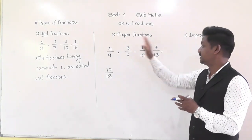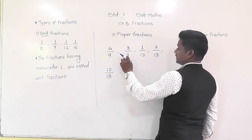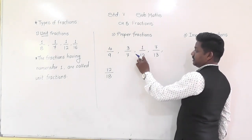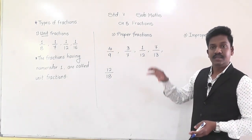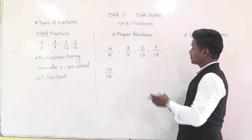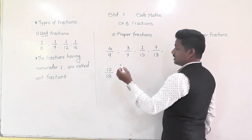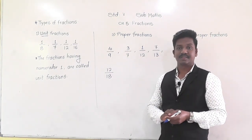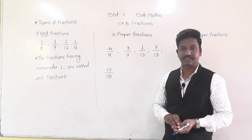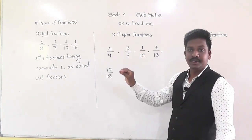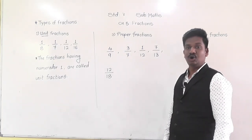Can you observe one similar thing among these five fractions? Numerator is 4, denominator is 9. Numerator is 3, denominator is 7. Numerator is 1, denominator is 12. If you observe these fractions, you will come to know that in all these fractions, their numerators are smaller than their denominators. This is the speciality of these five fractions. So when the numerator of a fraction is smaller than its denominator, those fractions are called proper fractions.